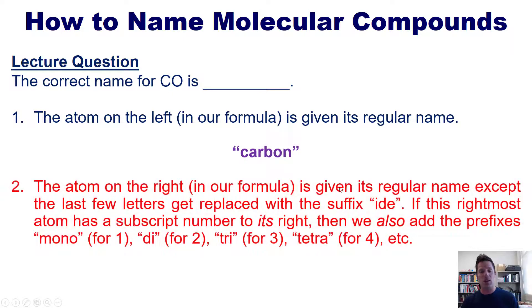Now for the element on the right, we're also, like our previous example, going to call it oxide. However, because it's on the right in the formula, we actually do write down a mono where applicable, or a di or a tri or a tetra and so forth. Because there's no subscript written here, it is an implied one and one corresponds to the prefix mono. So the correct name for this compound is carbon monoxide.